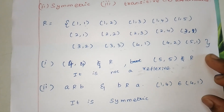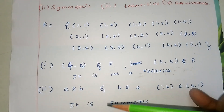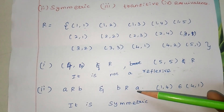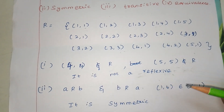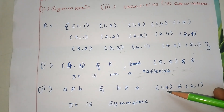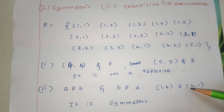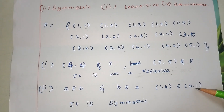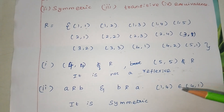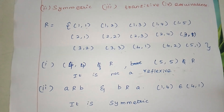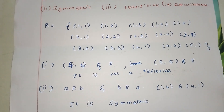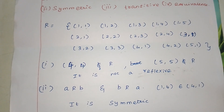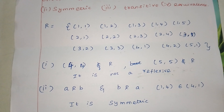Next, symmetric: if A is related to B, then B must be related to A. For example, (1,4) is in R and (4,1) is also in R. Checking all pairs, the condition holds. Therefore it is symmetric.